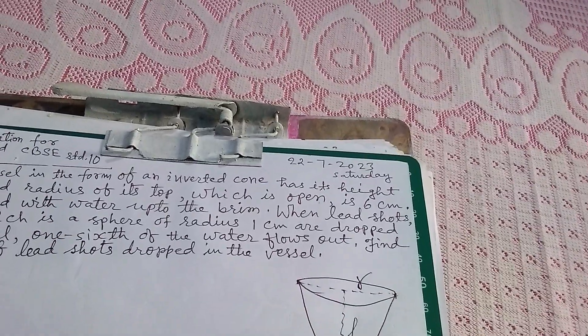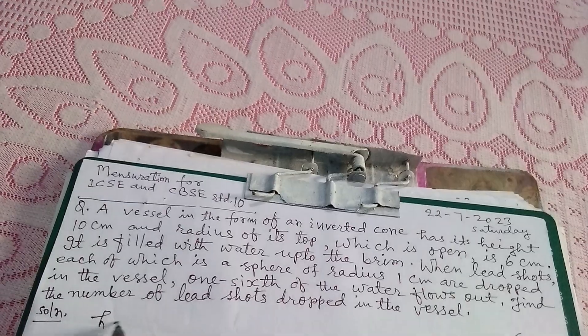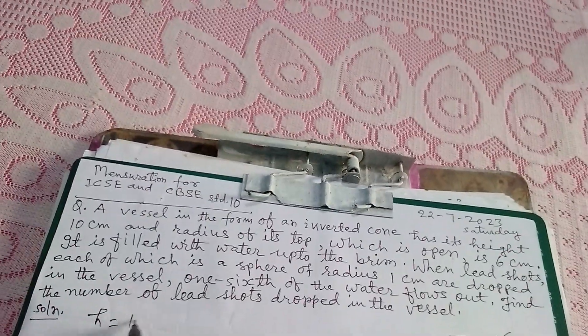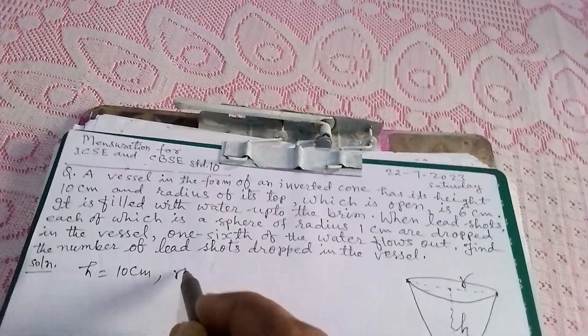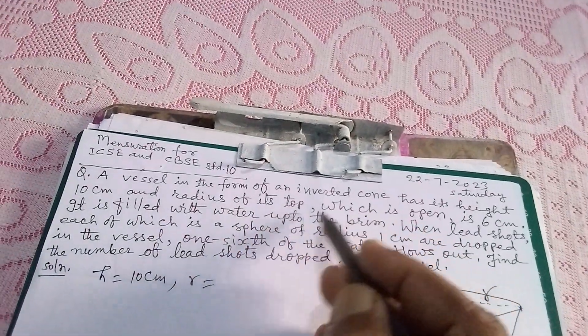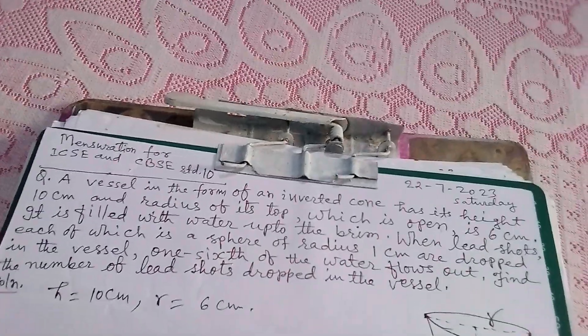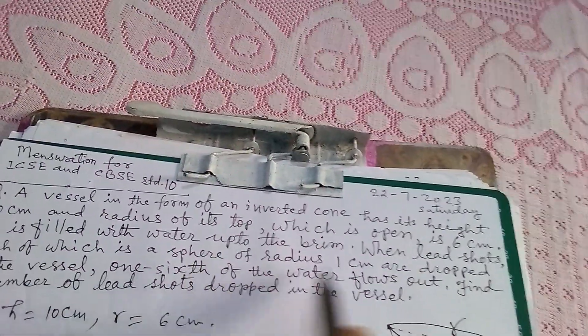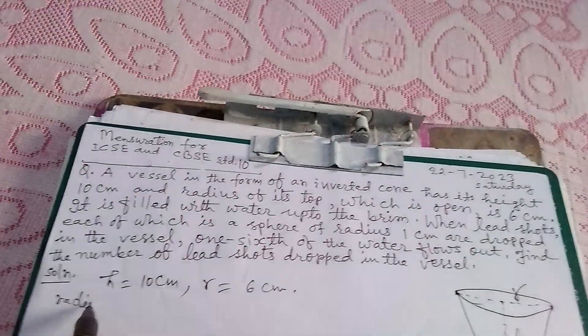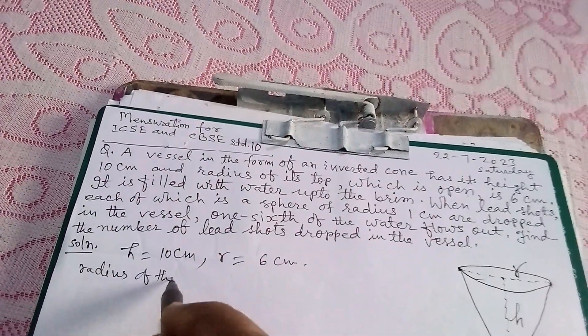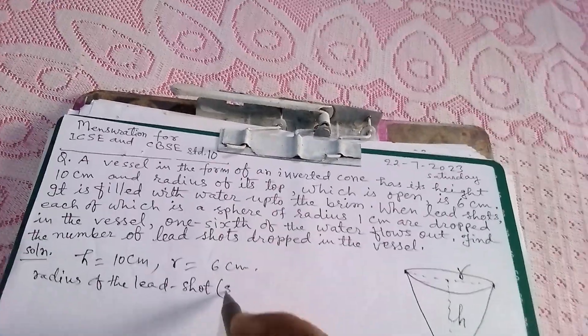Here H is given to us as 10 centimeter, radius is given to us as 6 centimeters, and radius of the lead shot, that means a sphere, is R1 that is 1 centimeter.